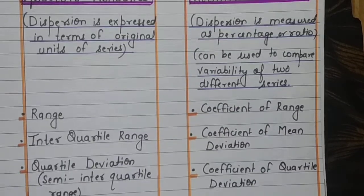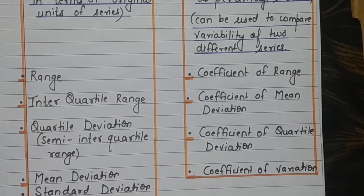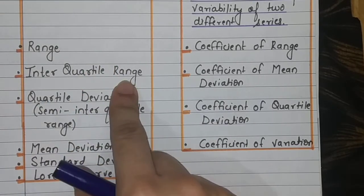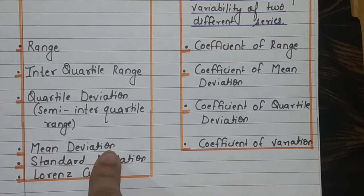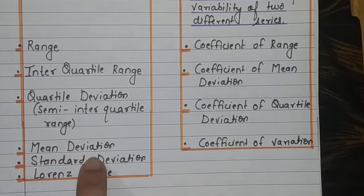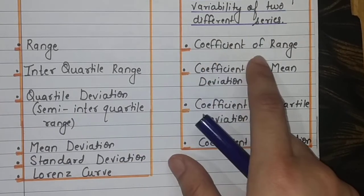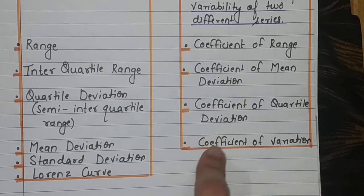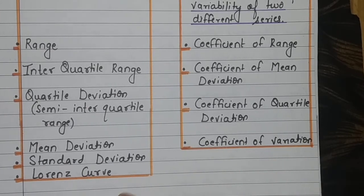Now what are the various measures of dispersion? The absolute measures are range, interquartile range, quartile deviation - we also call quartile deviation as semi-interquartile range - mean deviation, standard deviation, and the Lorenz curve. Relative measures are coefficient of range, coefficient of mean deviation, coefficient of quartile deviation, and coefficient of variation.